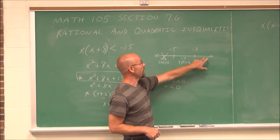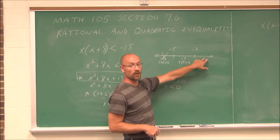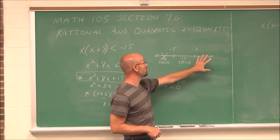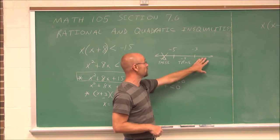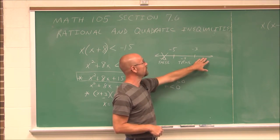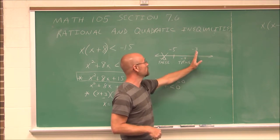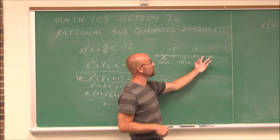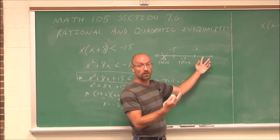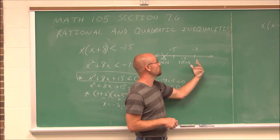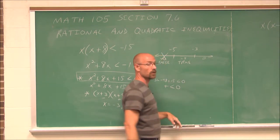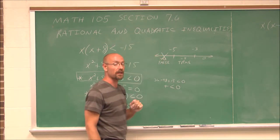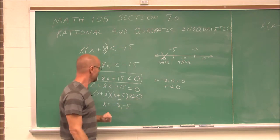Lastly, we have a third interval, and we should always test each interval. If I choose a value greater than negative 3 — I could go to the next one, which would be negative 2, but I like to use 0 because 0 makes my life easy.